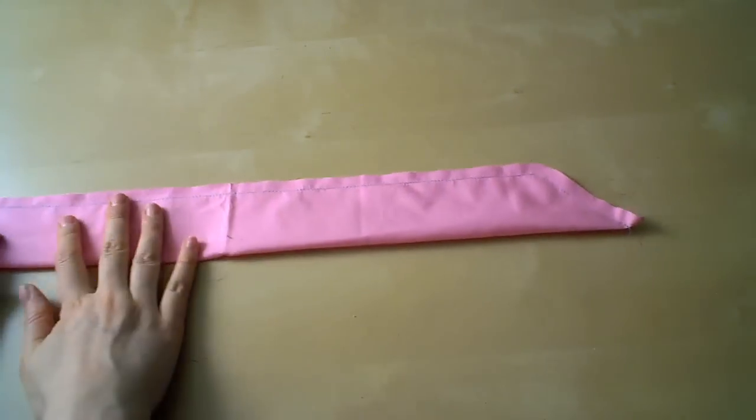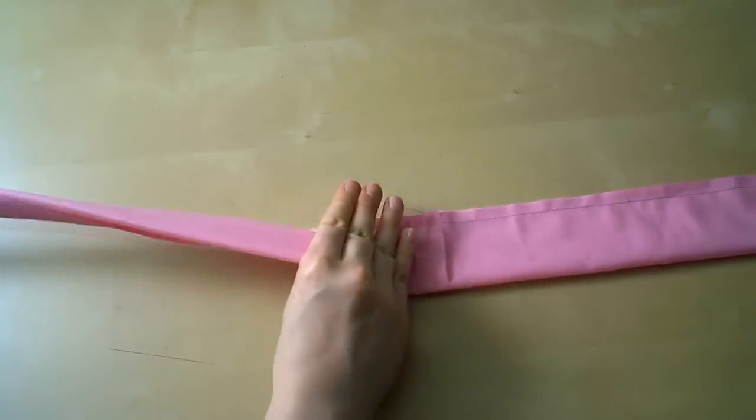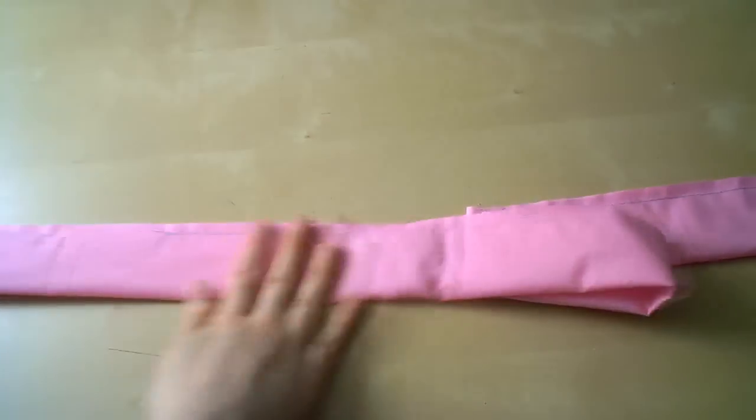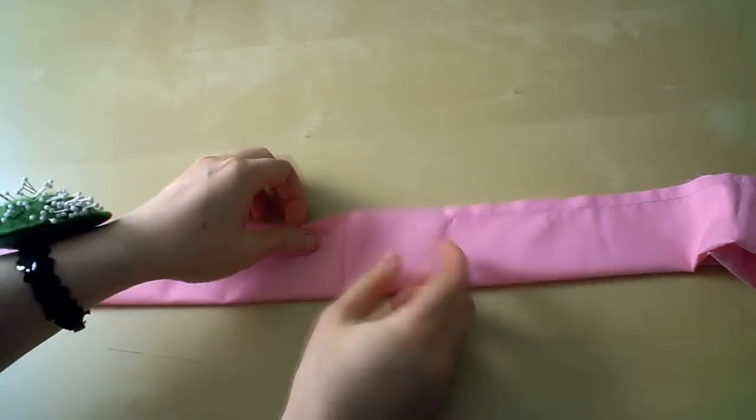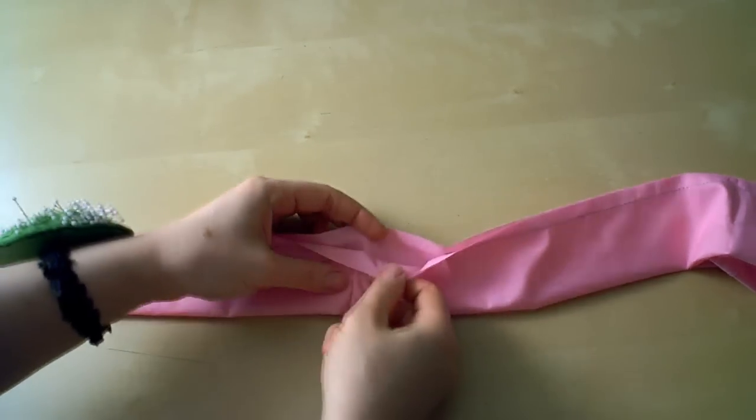The reason we mark the center is because when we sew it together, using a 3/8 inch seam allowance and a straight stitch, you want to leave the center 3 or 4 inches open, like so.